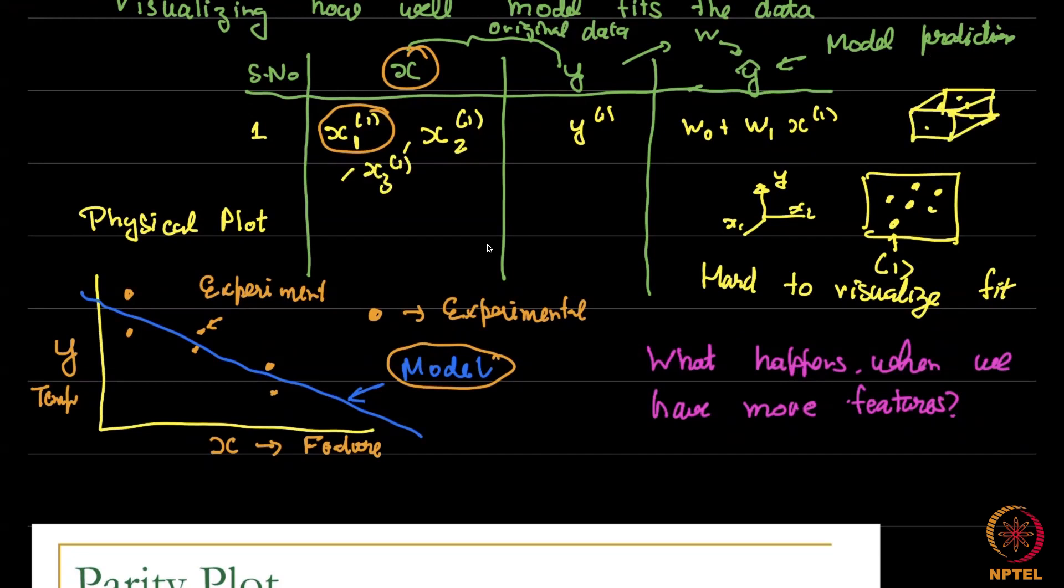Now the thing to notice is what's there on the x axis and the y axis of the parity plot. It's not the location or the feature versus the output temperature, it is something else. So let me show you that.